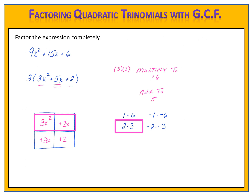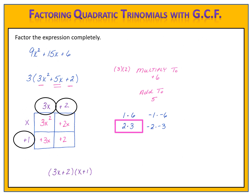The greatest common factor of 3x squared and 2x is x. We then use multiplication to fill in around the grid. x times 3x gives 3x squared, x times 2 gives 2x, and 3x times 1 gives 3x. We verify: 2 times 1 equals 2, which is the last number in the grid. My factors are 3x plus 2 times x plus 1. Don't forget the greatest common factor of 3 from the beginning. Now we have factored the polynomial completely.